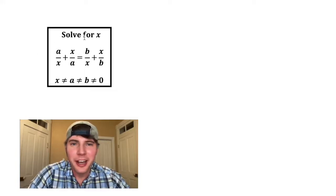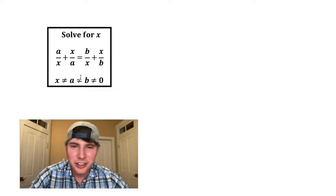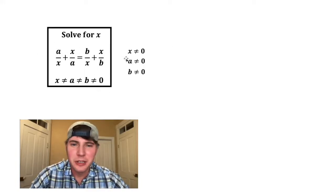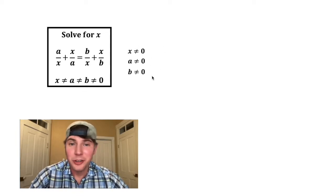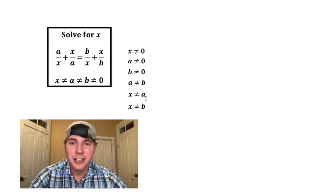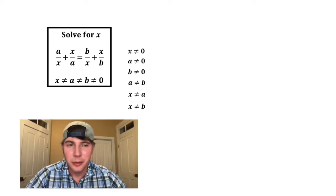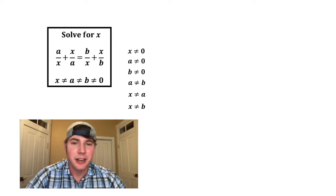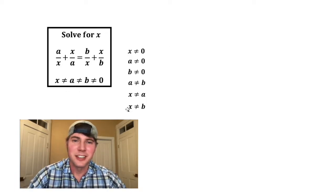Hey guys, it says solve for x, and this right here is something weird I've never seen before. I'm assuming it means x can't equal 0, a can't equal 0, and b can't equal 0, but also that a can't equal b, and also that x can't equal a, or x can't equal b. So I'm going to assume it means all these things at the same time. Let me know what you think of this notation, but let's just assume it means this.